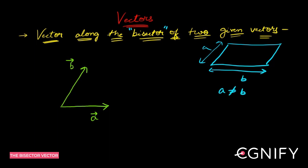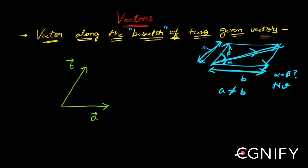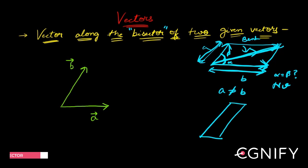This is your first vector, this is your second vector, and the resultant is the diagonal. Now, will this angle alpha equal angle beta? The answer is no, because side a and side b are not the same. The resultant vector will always be bent towards the bigger vector. If one side is big and the other small, the diagonal will be bent more toward the bigger side.